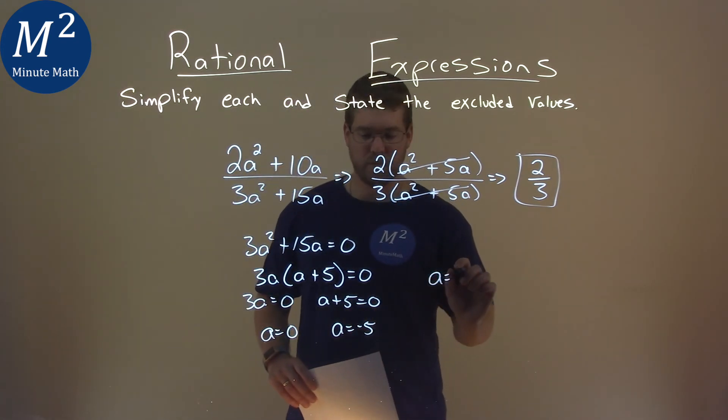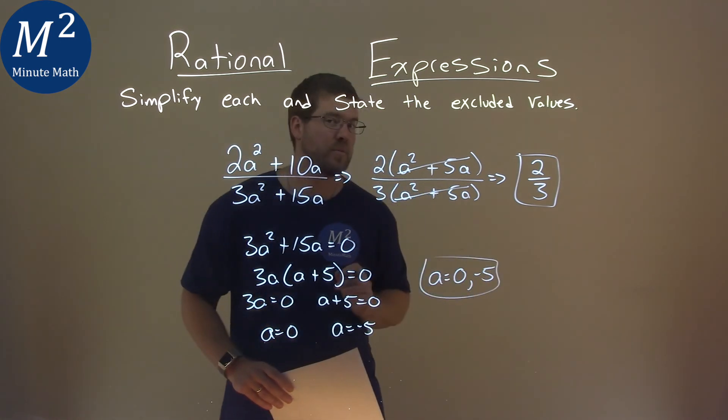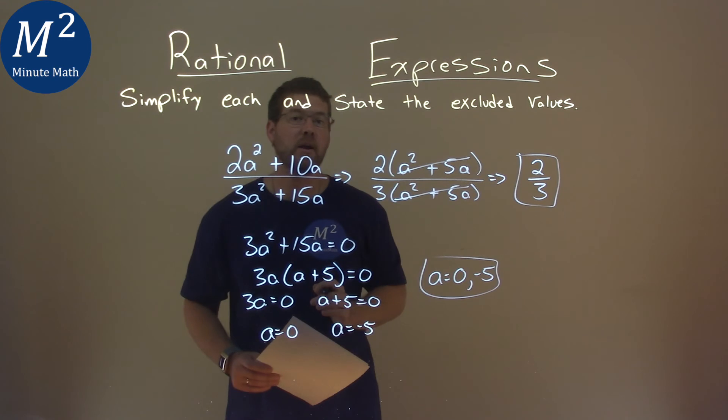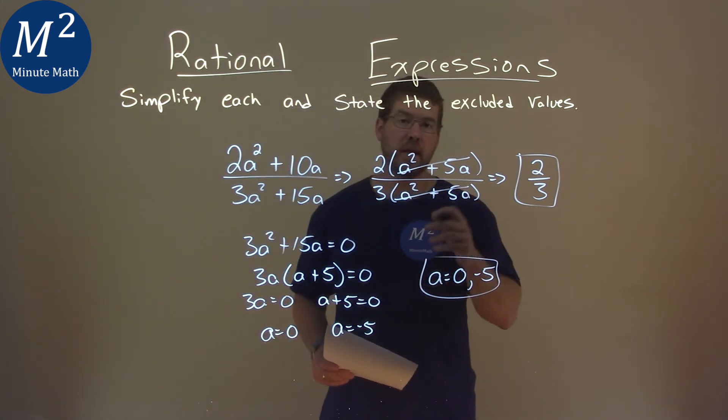And so our two values here are 0 and negative 5, and those are our excluded values. So our final simplified answer is 2 thirds, and our excluded values are 0 and negative 5.